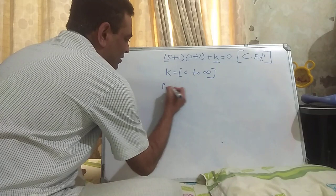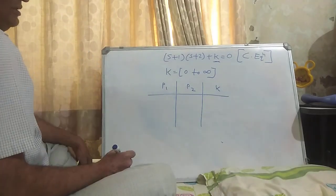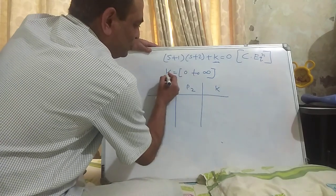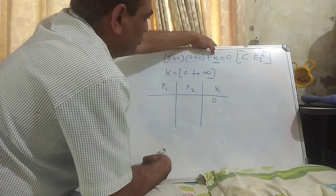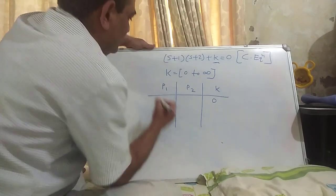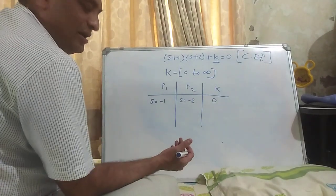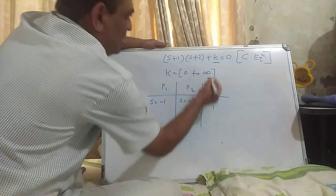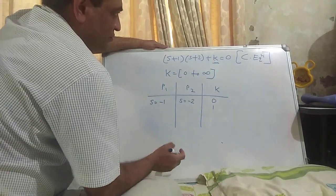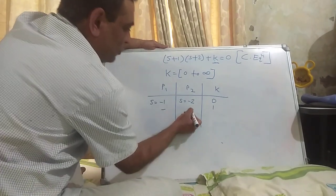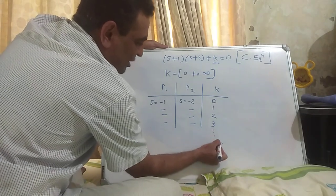There are two poles here — pole P1 and pole P2. If I prepare a table and put K = 0, the closed-loop poles are s = -1 and s = -2. Similarly, I can put K = 1 and I will get some other roots by solving the quadratic polynomial. For K = 2, there will be another set of roots. Similarly, I can go up to infinity and get corresponding roots.